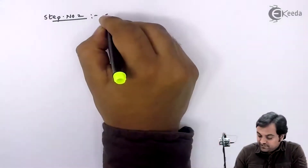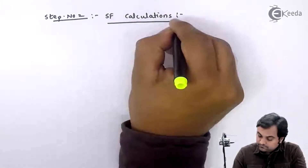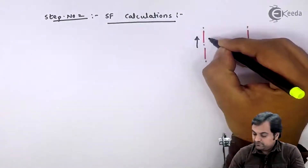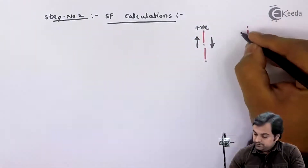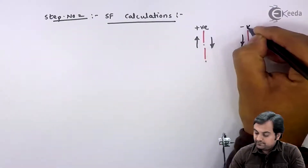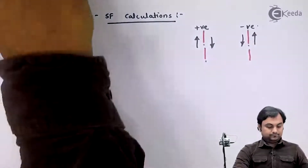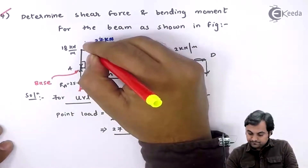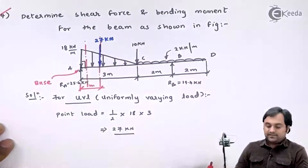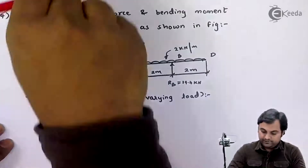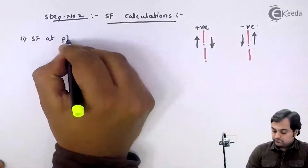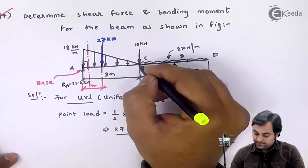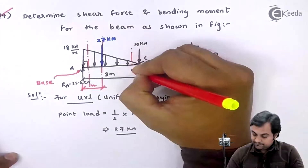Step two is the shear force (SF) calculations. First, the sign convention: upward force to the left and downward force to the right are positive; downward force to the left and upward force to the right are negative. Taking a section to the right of A, the force to the left is RA = 25.6 kilonewton upward, so it is positive. I will next take SF to the left and then to the right of C.